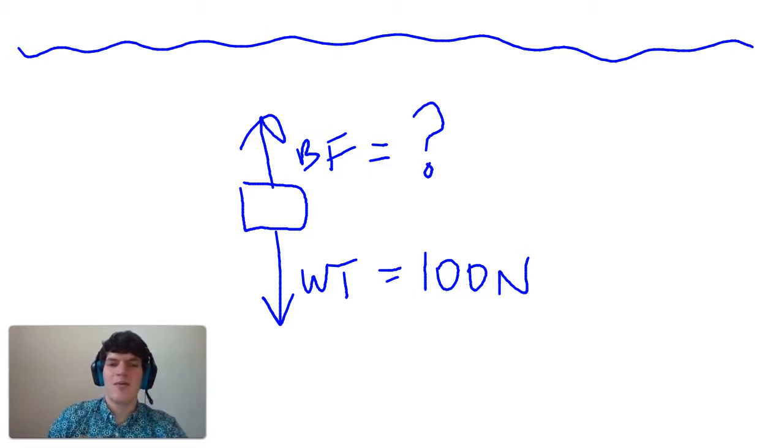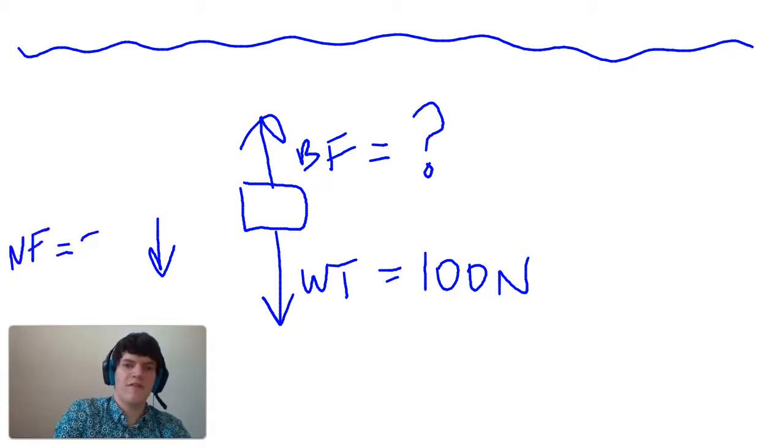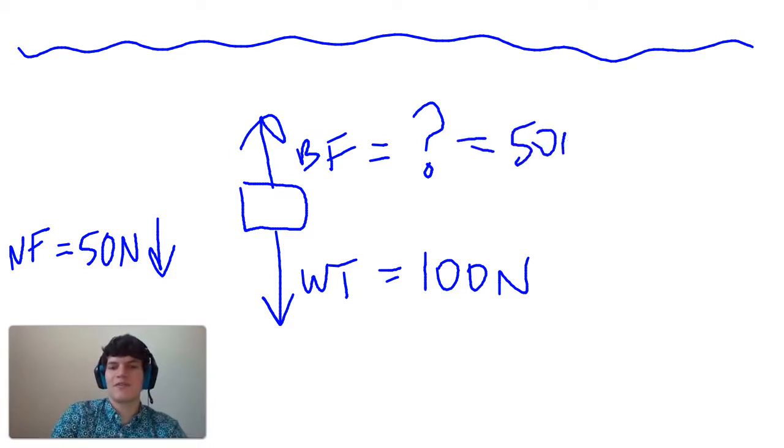I know that the buoyancy force must be less than the weight because the object is sinking. So I know that the net force must be in this downward direction. I'm told that the net force is equal to 46.57 N. I'm going to approximate that as 50 N. So if the net force is 50 N in the downward direction, there must be an upward force of 50 N. So I think this buoyancy force must be approximately 50 N.